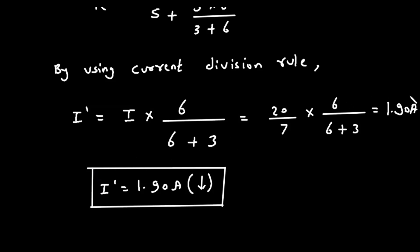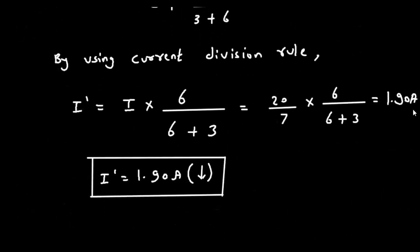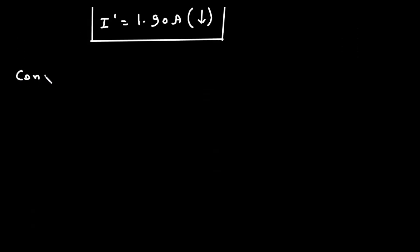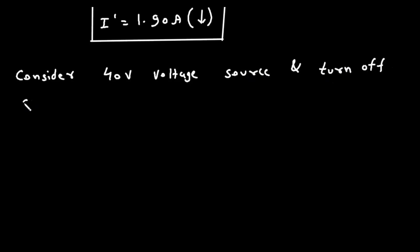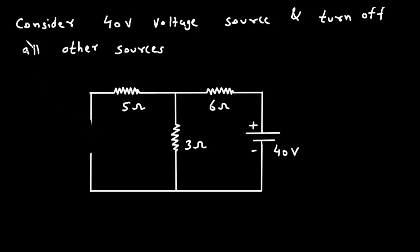Now we will find the current caused by the 40 volt voltage source. Consider the 40 volt voltage source and turn off all other sources. We have to turn off the 20 volt voltage source — again this is a voltage source, so we replace it with a short circuit. The current flows from positive to negative, so the direction of this current I double prime will be like this.